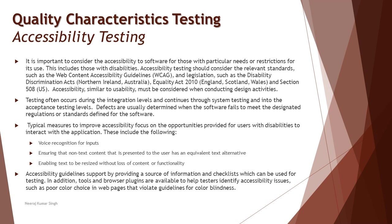Defects are usually determined when the software fails to meet the designated regulations or standards defined for it. There are several tools available to perform accessibility reviews and follow guidelines. The typical measures to improve accessibility focus on providing opportunities for users with disabilities to interact with the application — essentially simulating their interaction with the system and testing how we can improve the accessibility experience for disabled users with special needs.